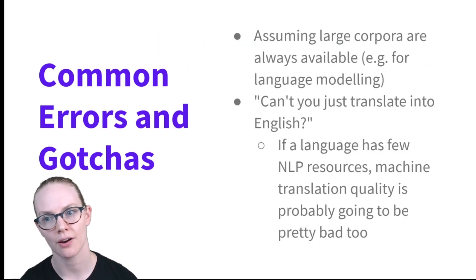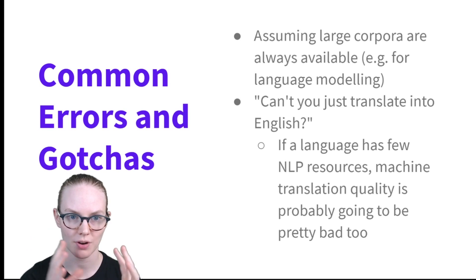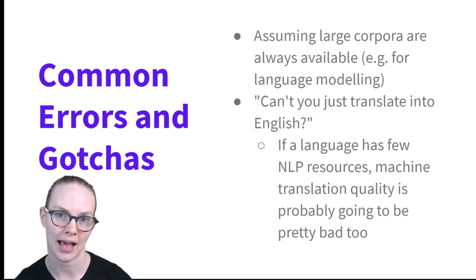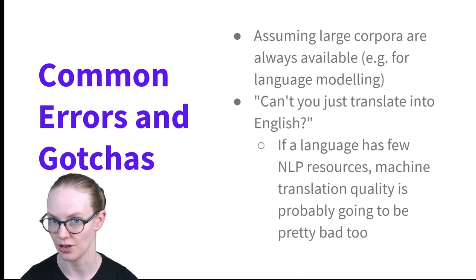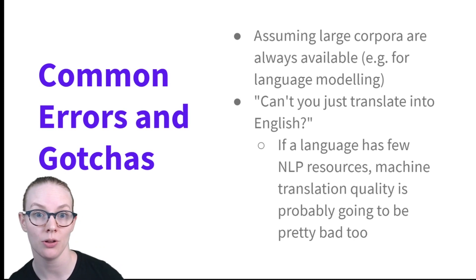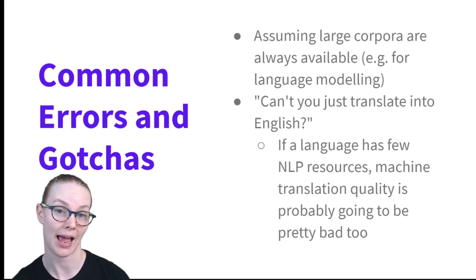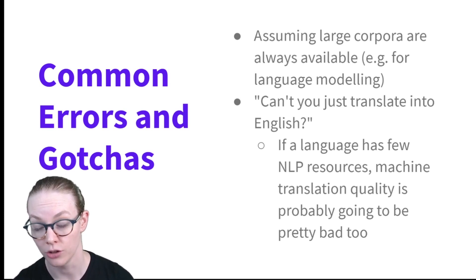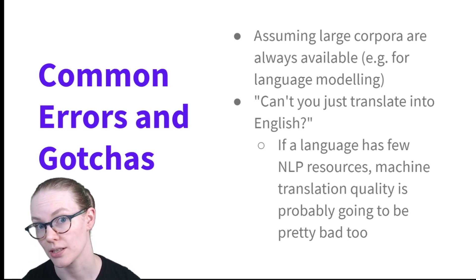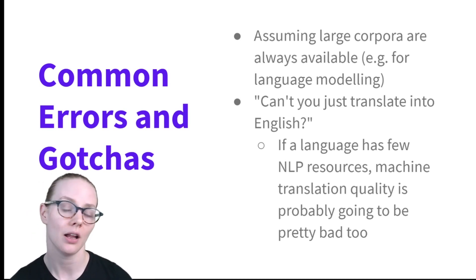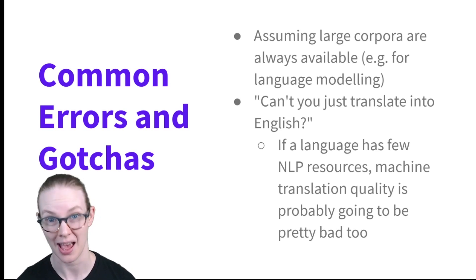And finally, some common errors and gotchas for moving from English to other languages. A really big one is that if you're working in a language other than English, you may not have access to large corpora — it's possible they exist but you can't access them, or it's also very possible that large corpora simply don't exist in a language. But you still want to develop technology that can help people, and this is where a rule-based system can be helpful.